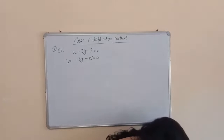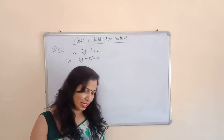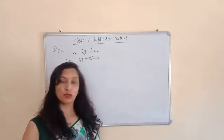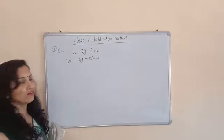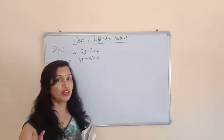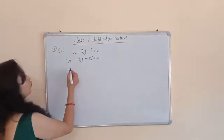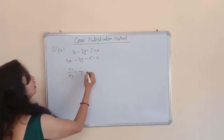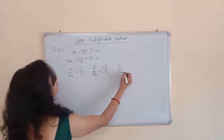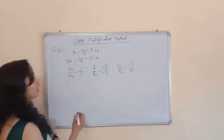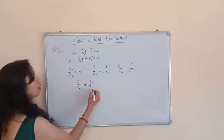The question asks which pair of equations has a unique solution, no solution, or infinite solution, and in case of a unique solution, find it using the cross multiplication method. To determine the type of solution, find the ratios a1/a2, b1/b2, and c1/c2. Here a1/a2 = 1/3, b1/b2 = -3/-3, and c1/c2 = -7/-15. Since a1/a2 is not equal to b1/b2, these equations have a unique solution.